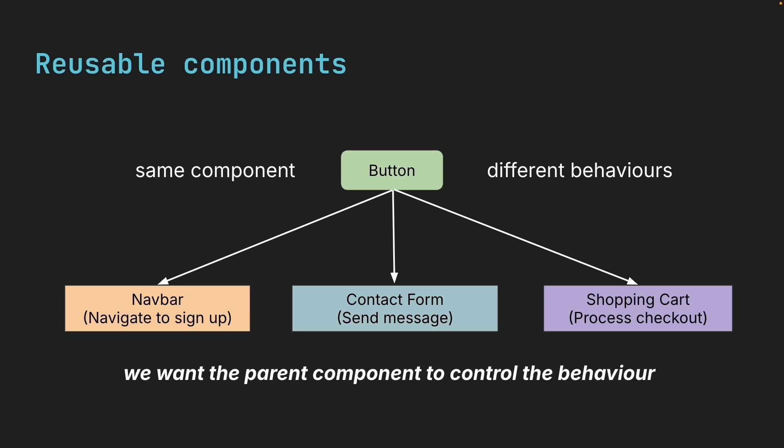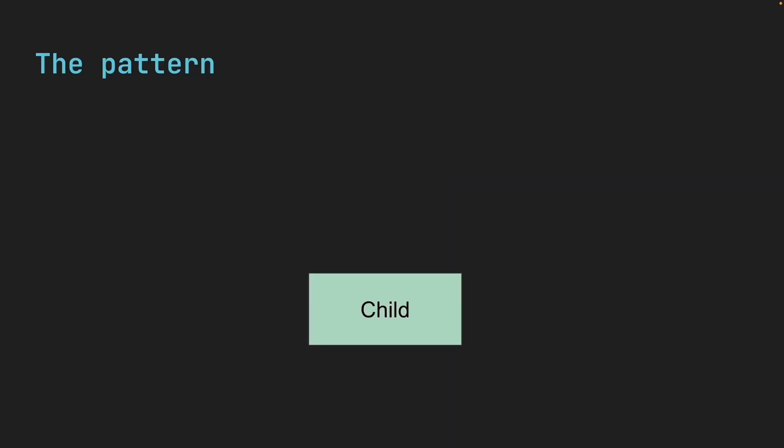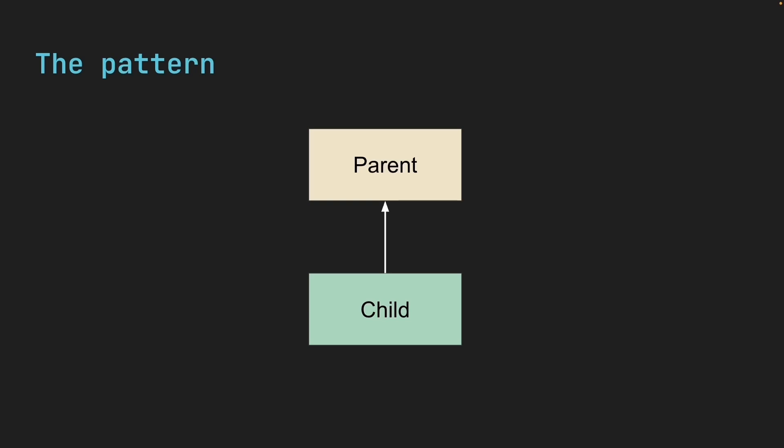Instead, we want the parent component to control what happens when the button is clicked. In the navbar, the navbar component should control its button's behavior. In the contact form, the contact component should decide what happens when its button is clicked. In a shopping cart, the shopping cart component should decide what happens when its button is clicked. The child component needs to communicate to its parent: hey, I was clicked.